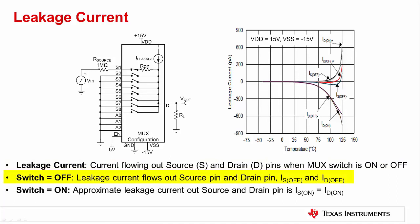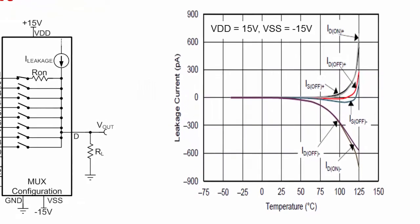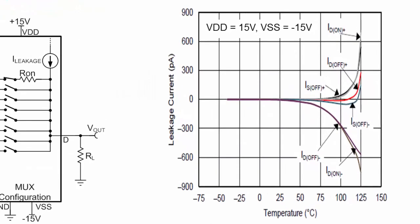When the switch is off, leakage current flowing through the source pin and drain pin is typically specified as IS off and ID off, respectively. When the switch is on, we can approximate the leakage current flowing through the source pin and the drain pin to be equal. Leakage current varies with temperature, and a typical leakage current plot for a multiplexer is shown here. Leakage current is typically in the range of a few tens of picoamperes at room temperature to nanoamperes at high temperature.